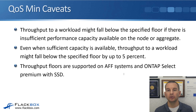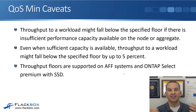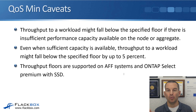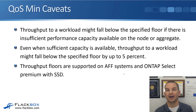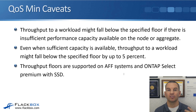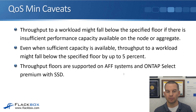Throughput to a workload might fall below the specified floor if there's insufficient performance capacity available on the node or aggregate. QoS is not magic — it cannot somehow magically give more performance than is available on the underlying hardware. Even when sufficient capacity is available, throughput might fall below the specified floor by up to 5%. Throughput floors are supported on AFF systems and ONTAP Select Premium with SSD, and as a newer feature, there are some limitations which are expected to be removed in later versions.